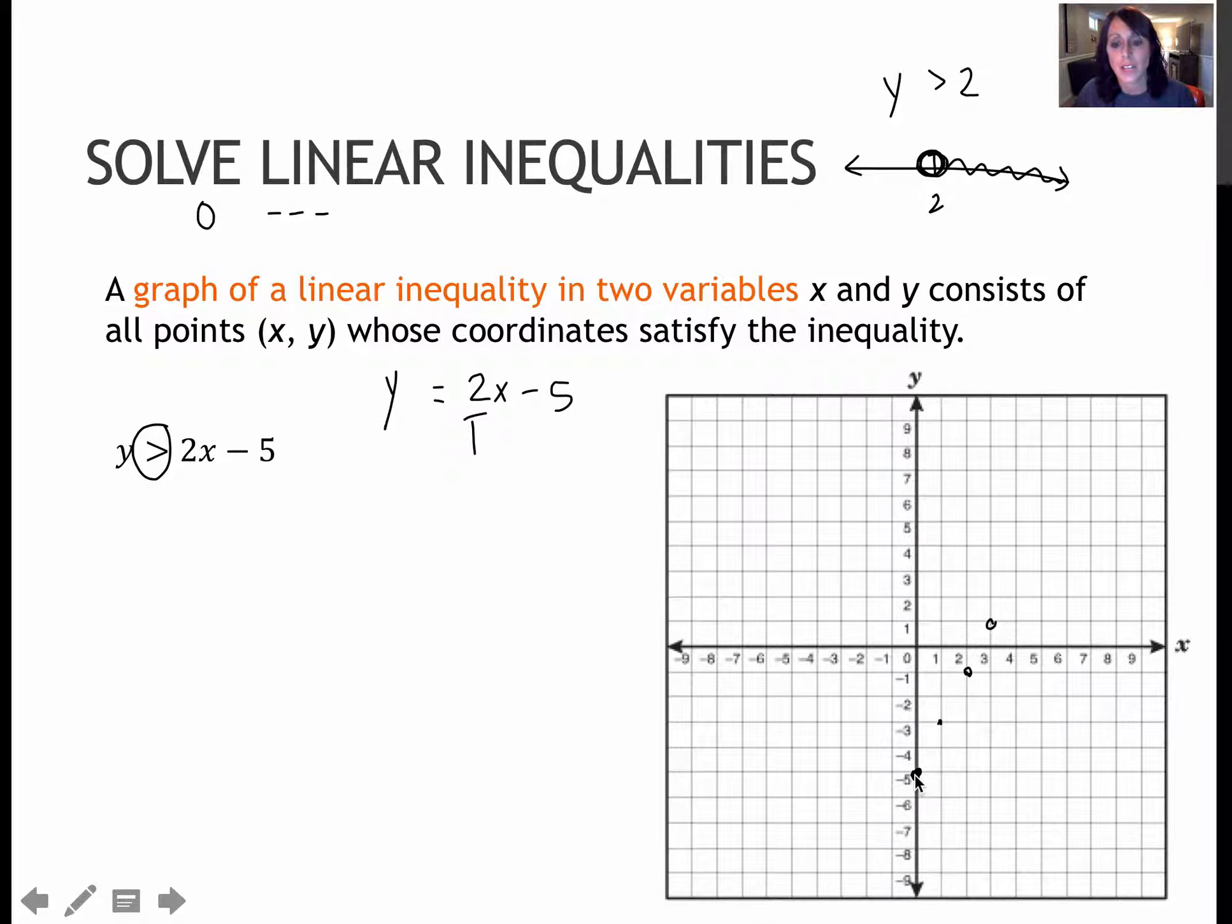So for instance, if I use the point 0 comma negative 5 in this equation, 2 times 0 and then negative 5, I end up with negative 5 is greater than negative 5, which is false. But all of the stuff really close to that would make this equation true. So here, I'm going to go ahead and connect the dots with a nice dotted or dashed line.